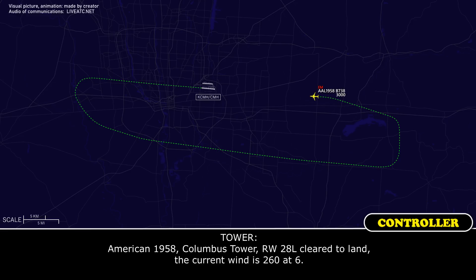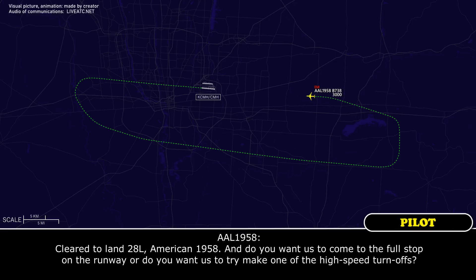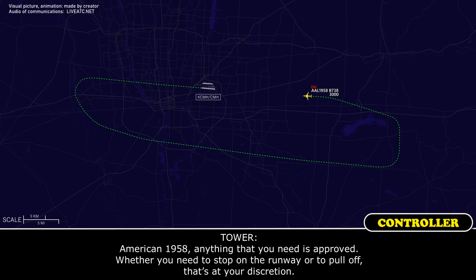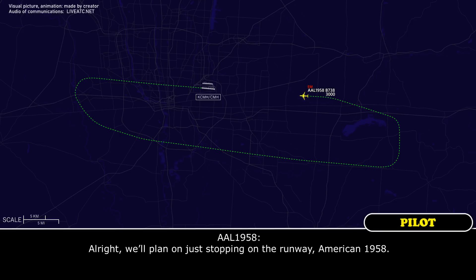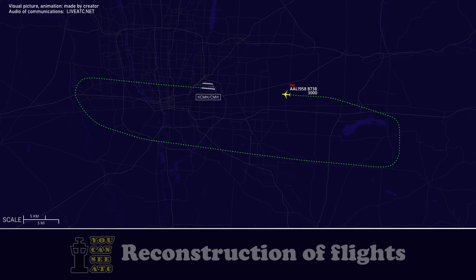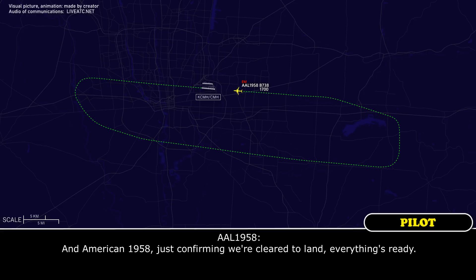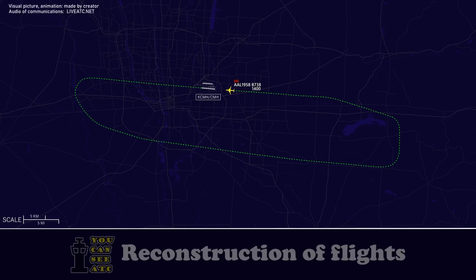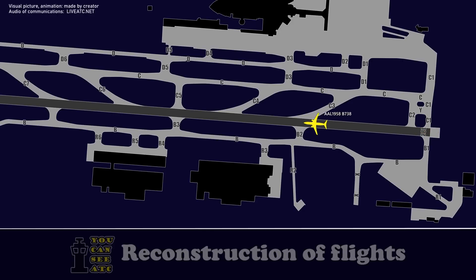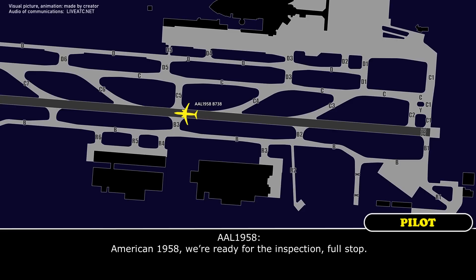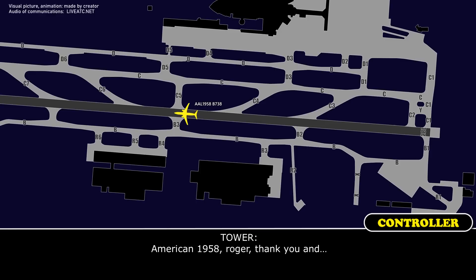American 1958, Columbus Tower, runway 28L, clear to land — current wind 260 at 6. Clear to land 28L, American 1958. Do you want us to come to a full stop on the runway or try to make one of the high-speed exits? Anything you need is approved — whether you stop on the runway or pull off, that's at your discretion. We'll plan on just stopping on the runway, American 1958. Roger. American 1958, confirm cleared to land — everything is ready. We're ready for the inspection — full stop. American 1958, roger. Thank you, and here they come.